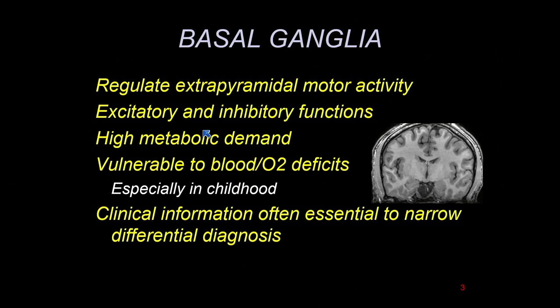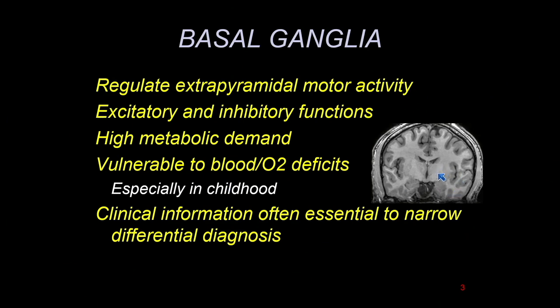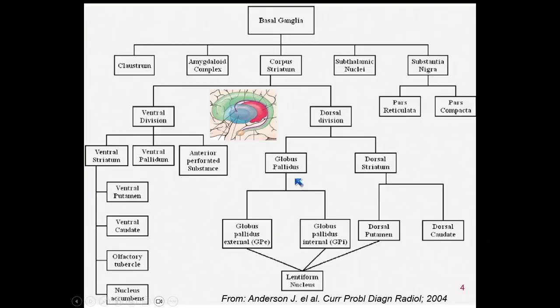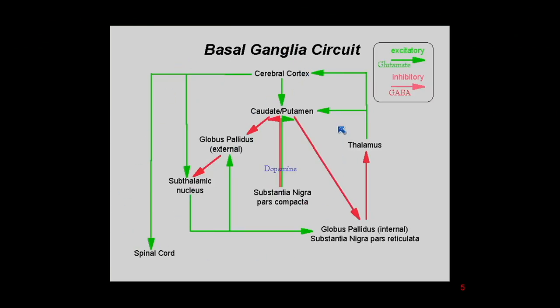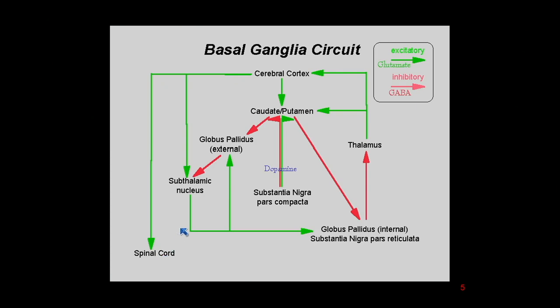There are both excitatory and inhibitory functions — very important in modulating fine motor control. And if you deprive these high-metabolic little engines of their substrates — oxygen, glucose, and minerals, and things they need to function — bad things happen in terms of symptoms. You can also get physical insults to these structures, especially in childhood. Looking at all the structures of the basal ganglia and their interconnections can seem daunting, but the overview is: from the cortex, to execute motor activity, the modulation by this extrapyramidal system has excitatory and inhibitory functions before output goes to the spinal cord and extremities.